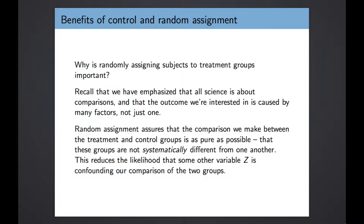Let's recap why control and random assignment are so important. Science is all about comparisons, and the outcome we care about is influenced by all sorts of factors. Random assignment means that when we compare the treatment and control groups, that comparison is as pure as we can make it. We've tried to eliminate through the random assignment procedure any systematic differences between the treatment and control group, reducing the likelihood that some other variable determines which group people are in. By removing that, we subtract away all these confounders and have a really good comparison to see how the groups differ on the outcome we're interested in.